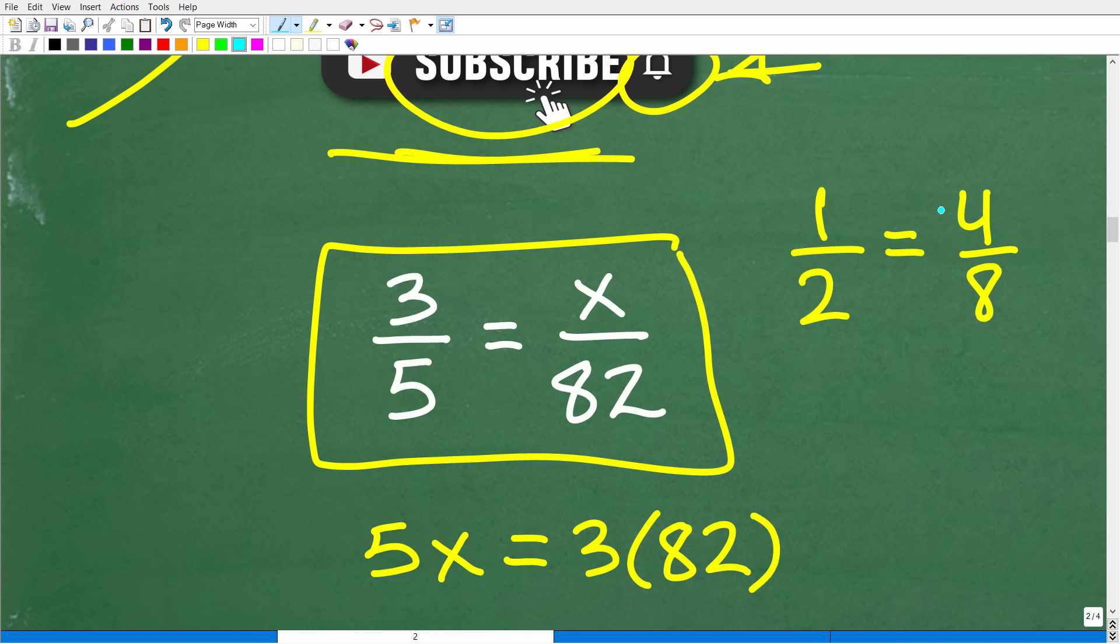Now, because ratios and rates are fractions in and of themselves, you can also define a proportion as two equal rates or ratios, but effectively, it's simply just two equal fractions. Now, let's take a look at a property, and this property we're going to be using to solve for this variable X. This is a critical property of proportions, and that is the cross product.